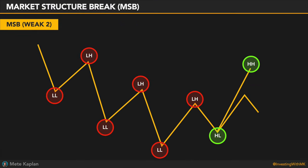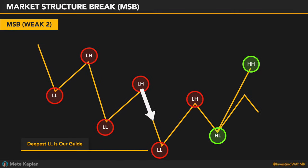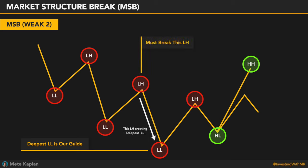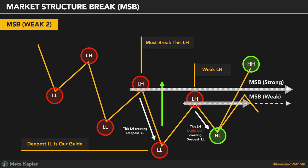Second weak MSB. Where is our deepest lower low? Yes, here. Which lower high creates it? Yes, this one. So until we break that lower high strongly, we cannot consider it a strong MSB. Sometimes price will struggle and make ranges — a breakout from a small range is considered a weak MSB.